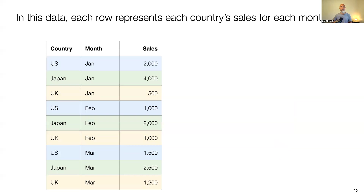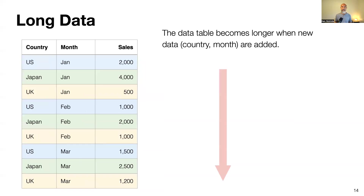That same exact data can be presented differently. Here, each row is not simply one country — US has three rows: US January, US February, US March. So each country has multiple rows. When more data comes in, say April or May, your data starts growing in a downward direction. This type of data is considered long data.